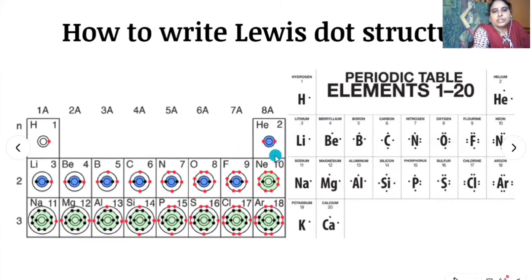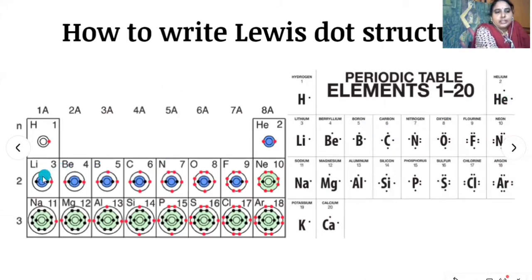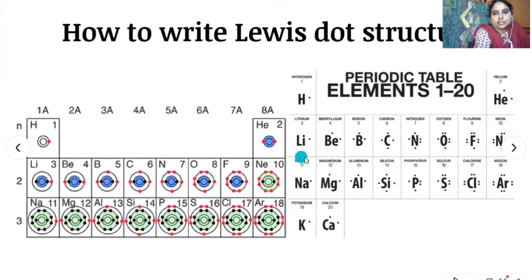For helium, atomic number is two, electronic configuration is 1s². The outermost shell contains two electrons, so we write two dots on helium. For lithium, atomic number is three, electronic configuration is 1s², 2s¹. The inner core shell contains two electrons and the outermost shell contains only one electron, so we put one dot on lithium.